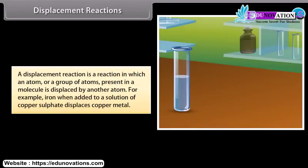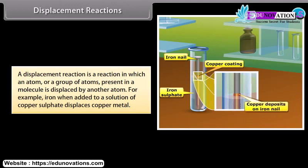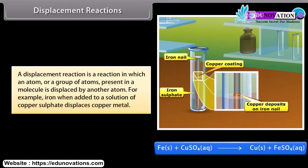Displacement reactions. A displacement reaction is a reaction in which an atom or a group of atoms present in a molecule is displaced by another atom. For example, iron, when added to a solution of copper sulfate, displaces copper metal.